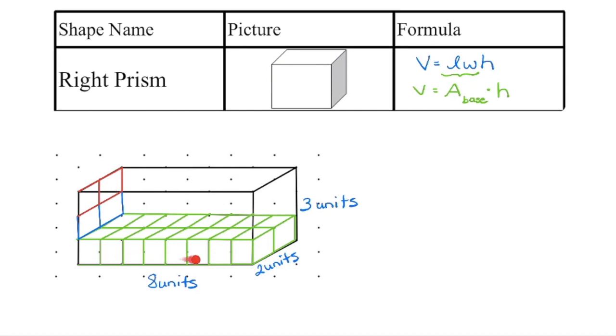So we're going to get 16 cubes per layer. If there are 3 layers, 16 times 3 is going to give us 48 cubic units. So it's the area of the base times the height if we have a prism, something with rectangular sides.